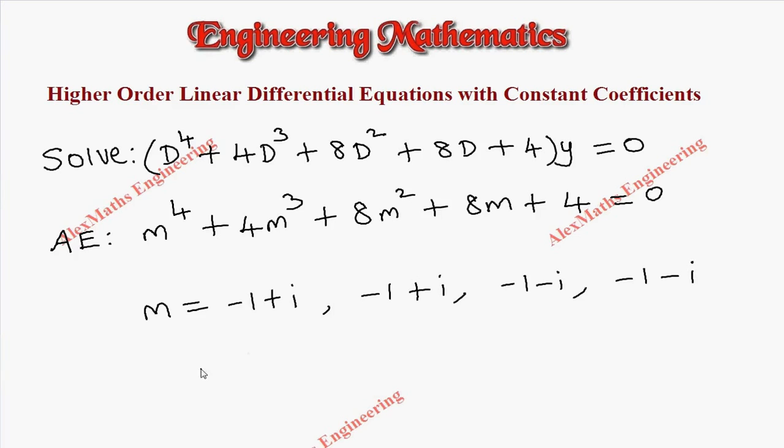So when we combine this, we get -1±i. That is combining this and this gives -1±i. Similarly, combining these two, once again, it is the same -1±i.